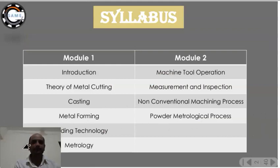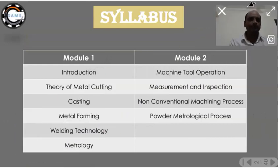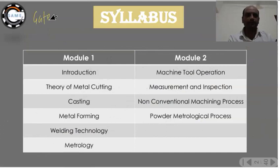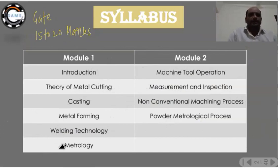In manufacturing engineering, the syllabus is divided into modules. In the GATE examination it will carry around 15 to 20 marks — in GATE 2019 it was asked for around 20 marks. So this subject is very important and you should not neglect it from the GATE examination point of view.